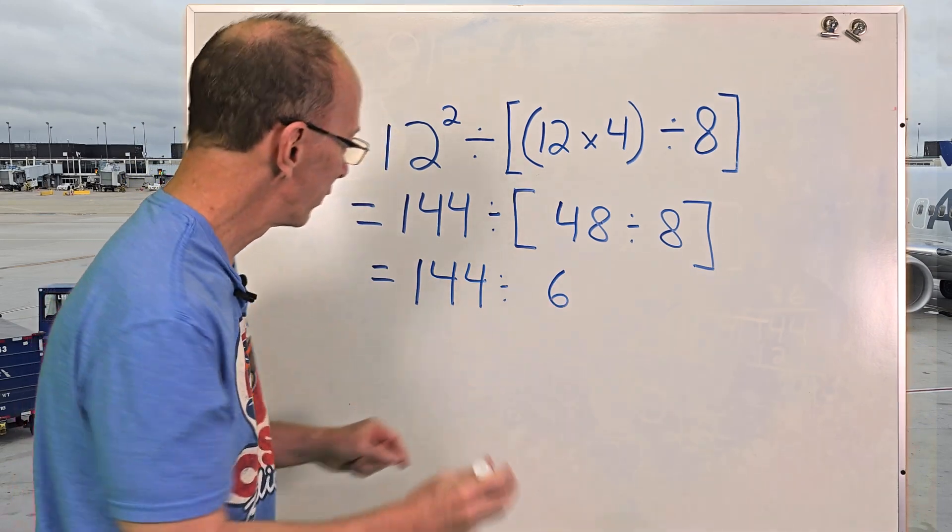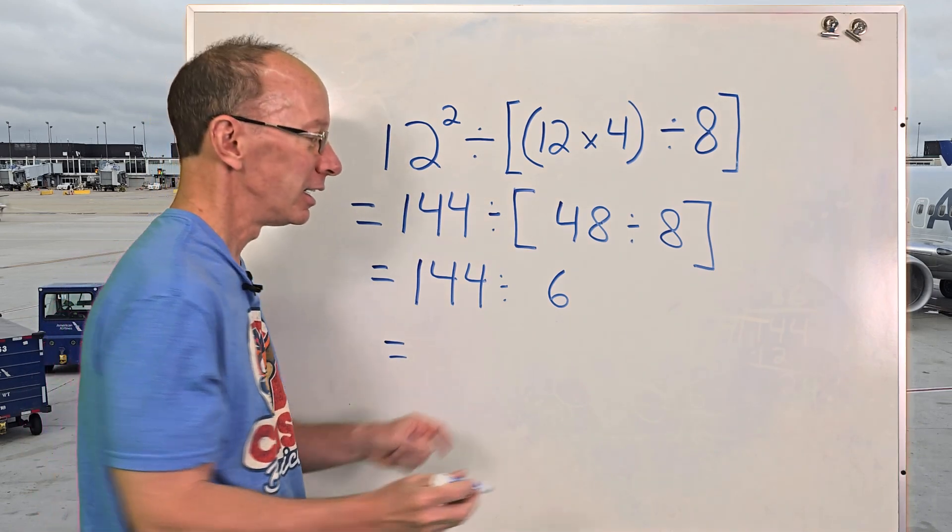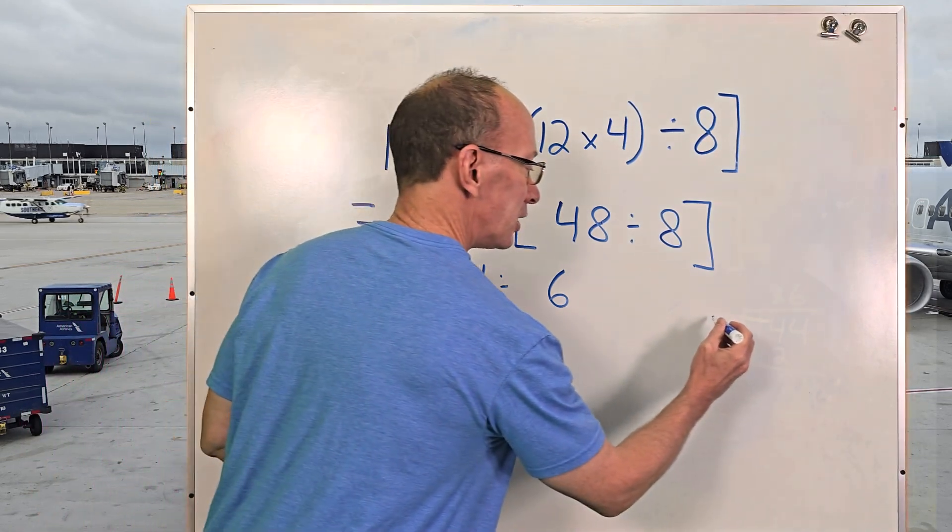All right, we're almost done. Now we just have to figure out what 144 divided by 6 is. So let's do a little long division right here.